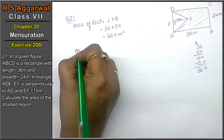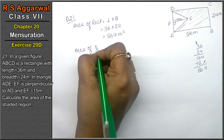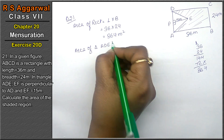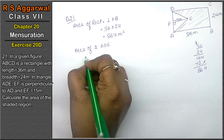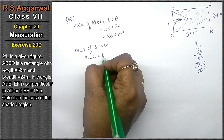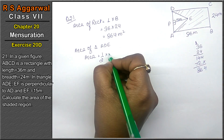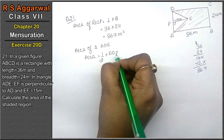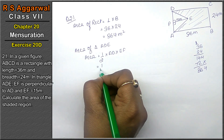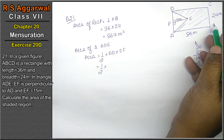Now calculate the area of triangle ADE. Area of triangle equals half into base into height. We take AD as the base and EF as the height. AD equals the breadth, since opposite sides of the rectangle are equal.